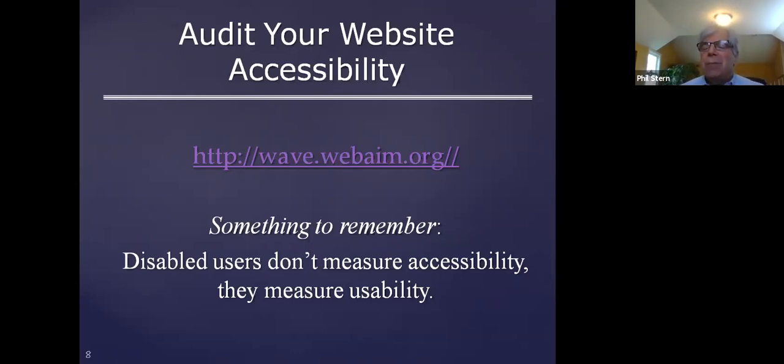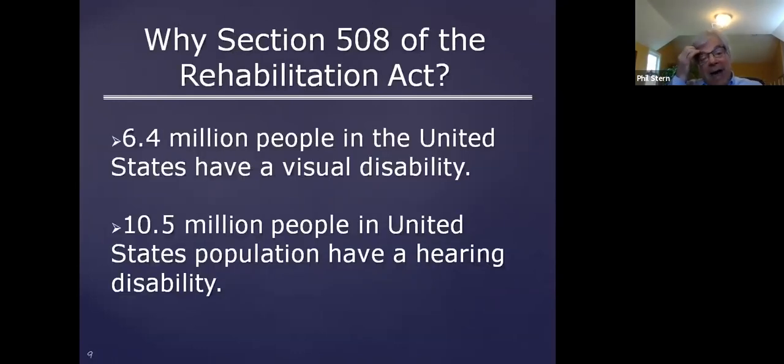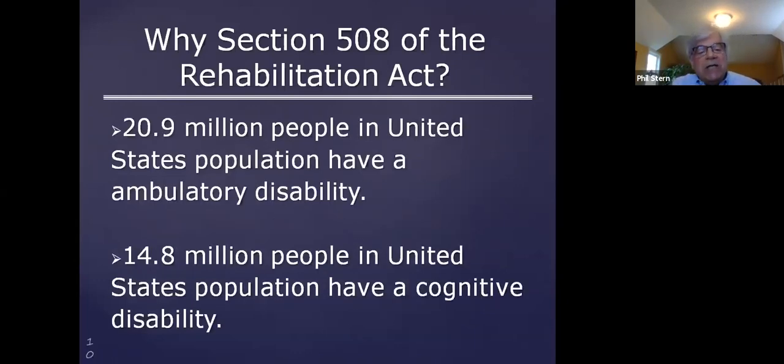Why do we have the New Jersey Law Against Discrimination to protect people with disabilities and Section 508 of the Rehabilitation Act to make sure that all electronic public electronics are accessible? Because 6.4 million people in the US have a visual disability, 10.5 million people in the US have hearing disabilities, 20.9 million people in the US have ambulatory disabilities, and 14.8 million people in the US have cognitive disabilities.